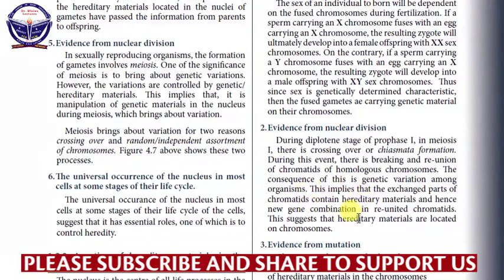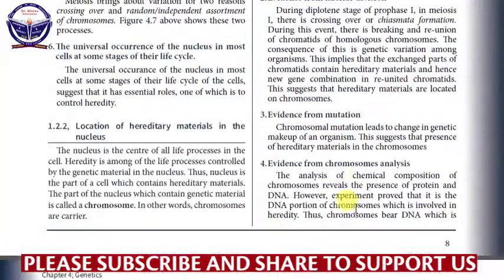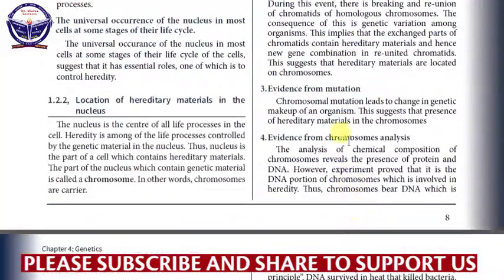This suggests that hereditary material is located on chromosomes. Evidence number three is the evidence from mutation. Mutation means a change. There are gene mutation and chromosomal mutation. Chromosomal mutation occurs when chromosomes are bent, broken, or altered.